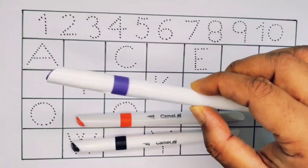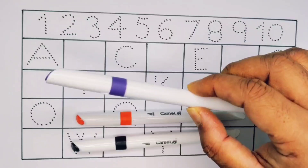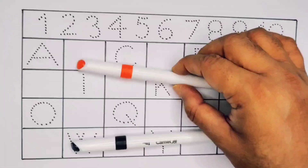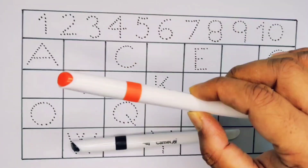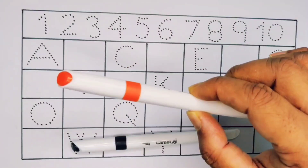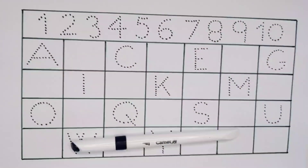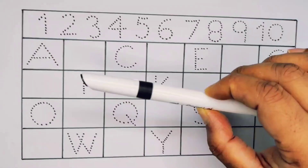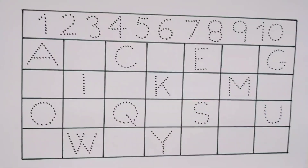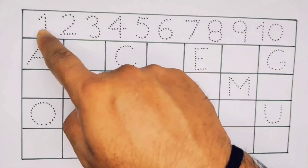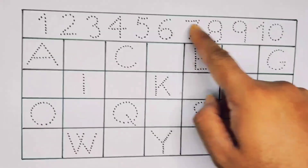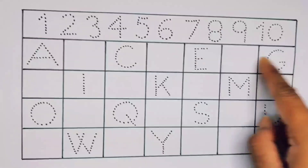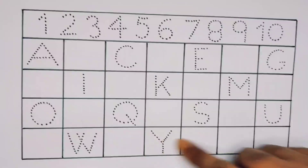Purple color, orange color, and black color. Now let's learn the numbers 1 to 10 and the alphabet A to Z.